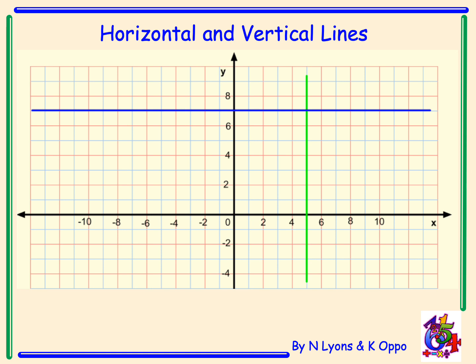Let's recap what we already know about horizontal and vertical lines. This diagram shows two lines. The blue line is a horizontal line and the green line is a vertical line. Looking at individual points along the blue line, the x coordinate is changing as we go from left to right, but the y coordinate stays the same — it's y equals 7. So the equation of this line is y equals 7.